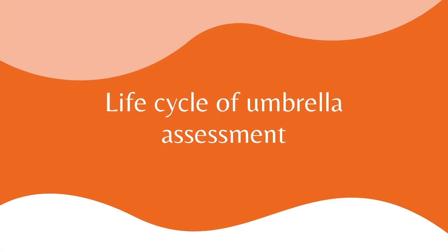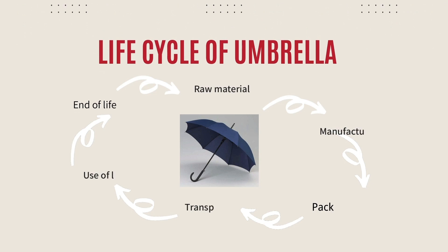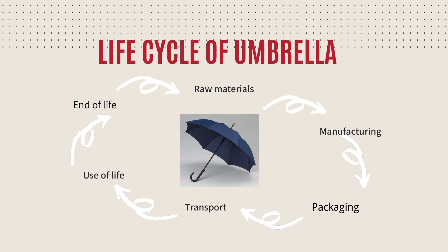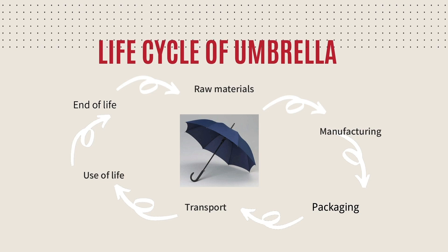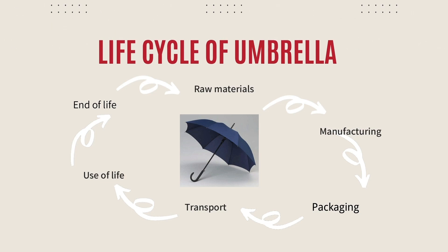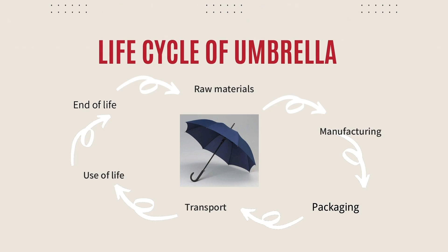Here is an introduction to the life cycle of the umbrella. The life cycle of umbrellas is divided into six stages: raw materials, manufacturing, packaging, transport, use of life, and end of life. I would like to introduce each of these stages.